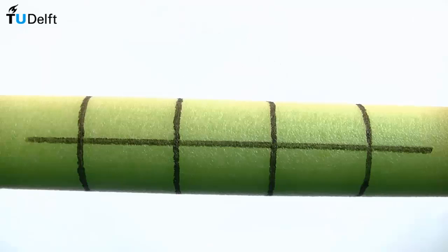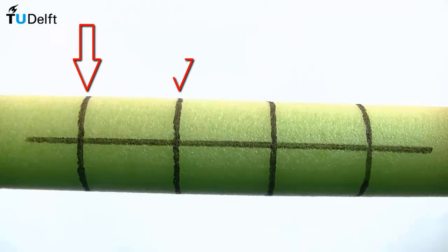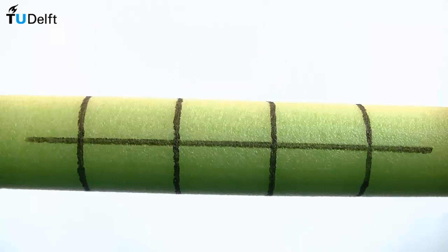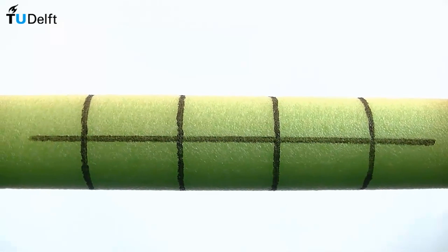We can simplify the fuselage to a hollow cylindrical tube structure. Could we also visualize these stresses for the closed section? I will use this foam toy that is very flexible and has a circular cross-section. On the surface of the tube I have drawn four lines around its circumference distributed equally along the length, and also a line parallel to the axis of the tube.